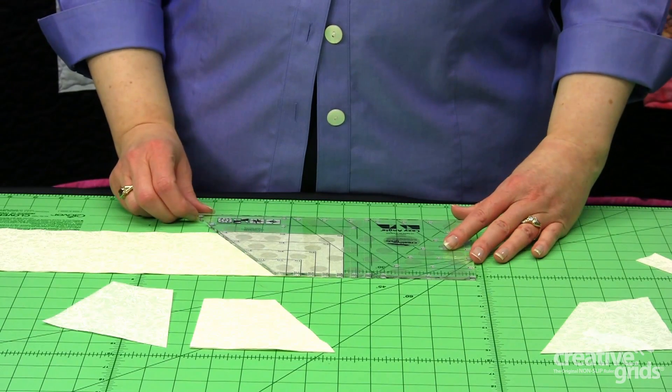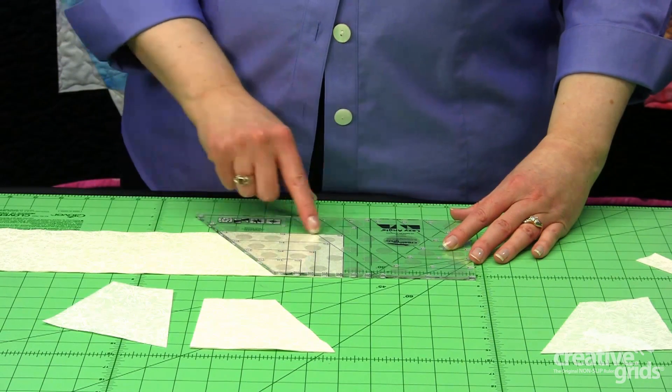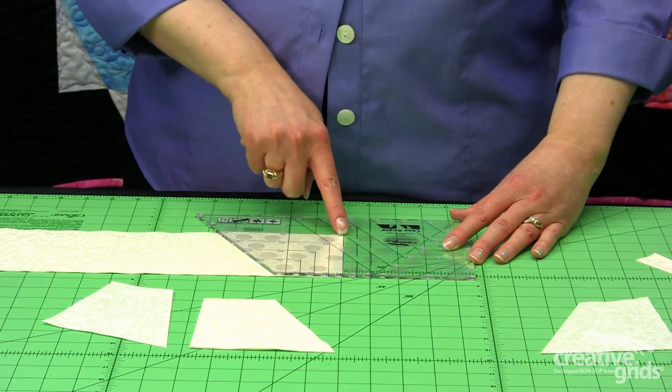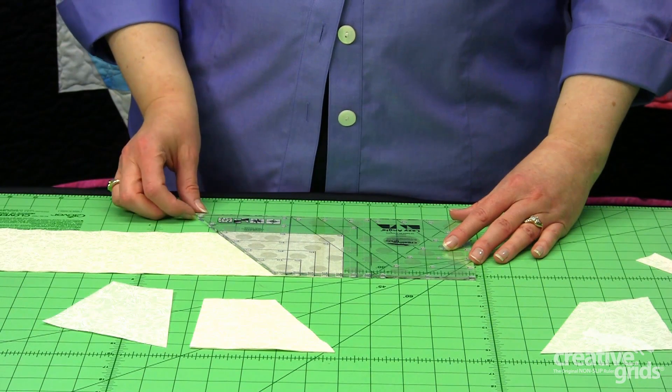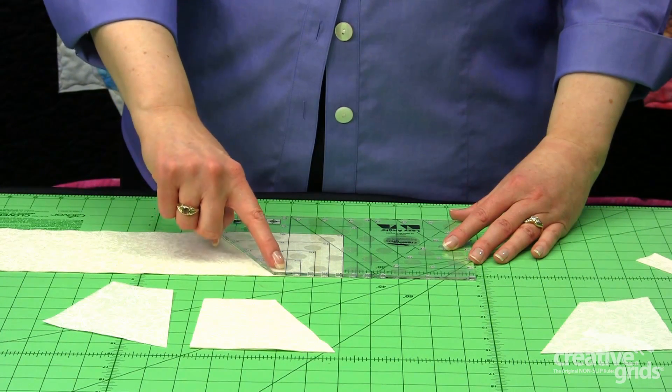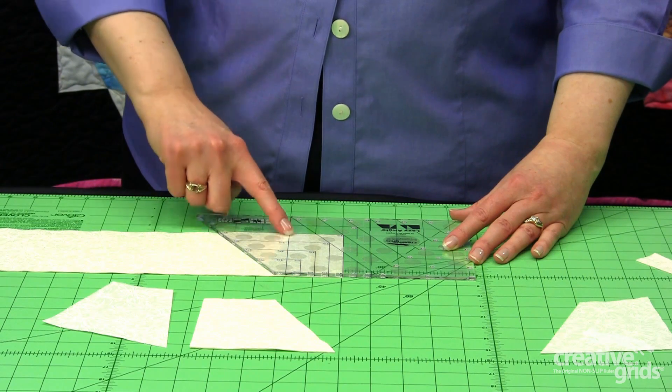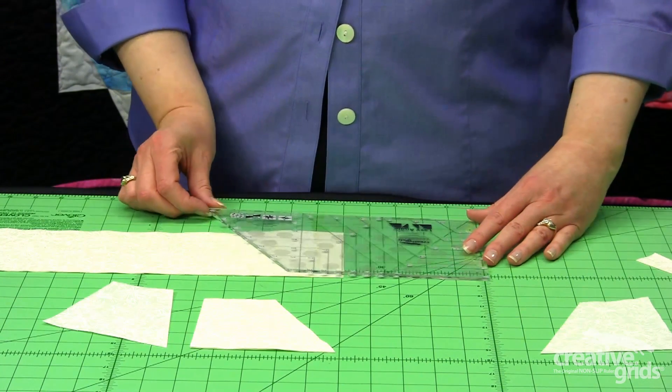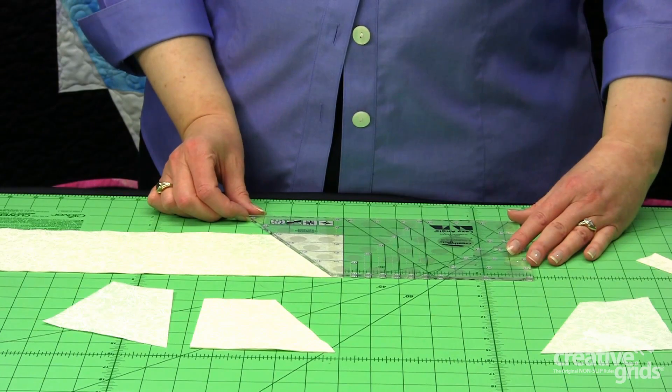Here's where we were for our first cut for the A, matching the 4 1/2 on the ruler with the 4 1/2 inch strip. For the B piece, we're going to follow this one line, top to bottom on the ruler, and simply move the ruler over until that matches the edge of our strip.